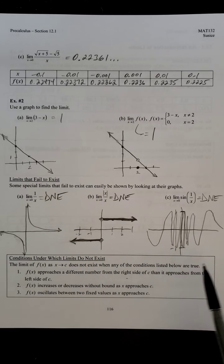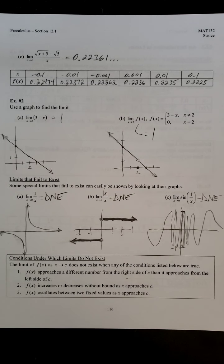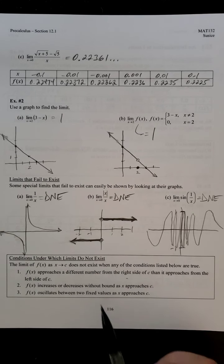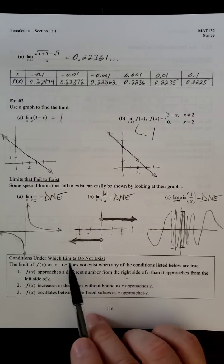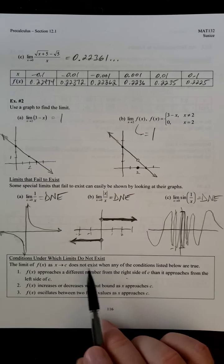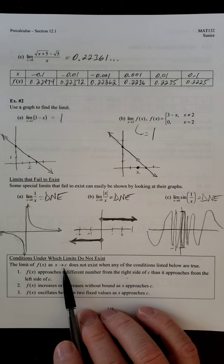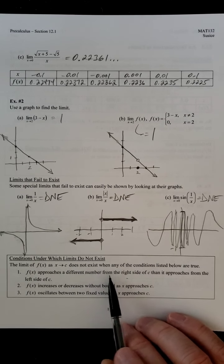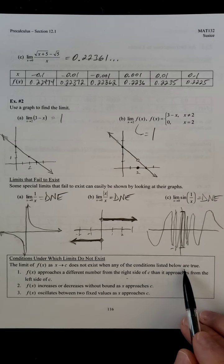So now that we see the three examples of cases that limits do not exist, we can summarize them down below. Conditions under which limits do not exist. The limit of f of x as x approaches c does not exist when any of the conditions listed below are true.